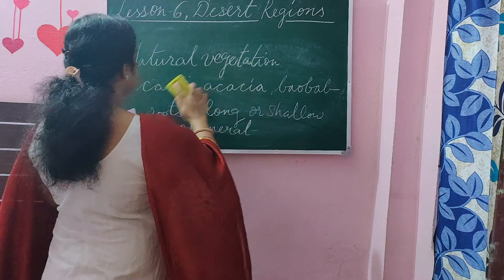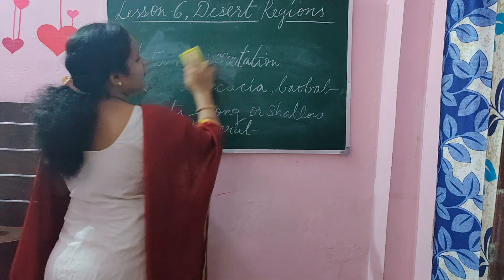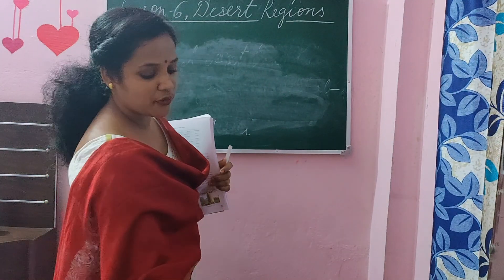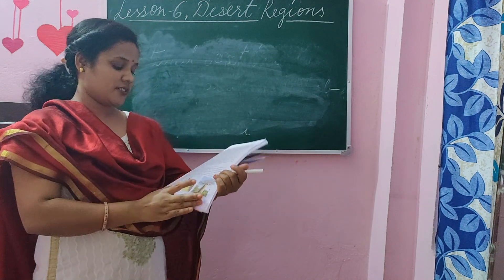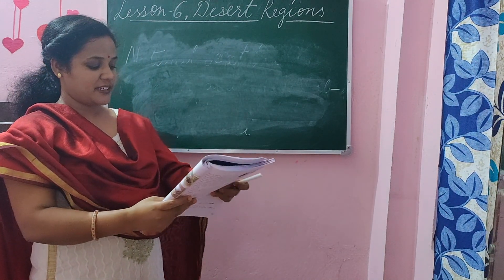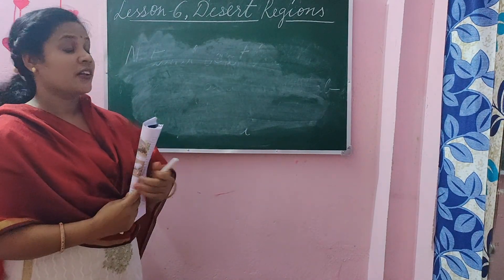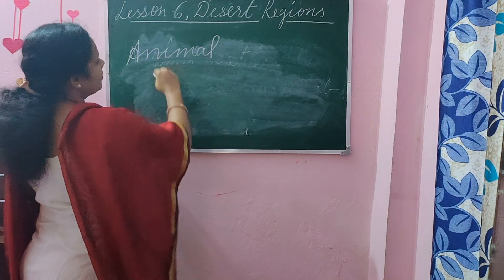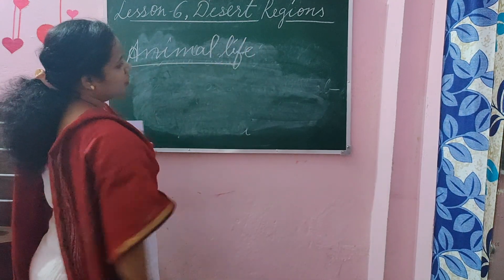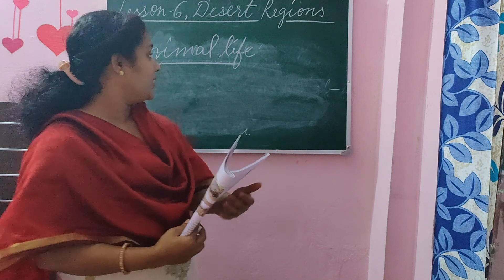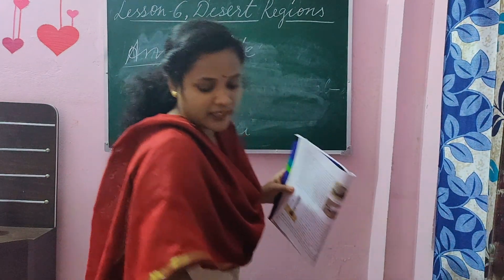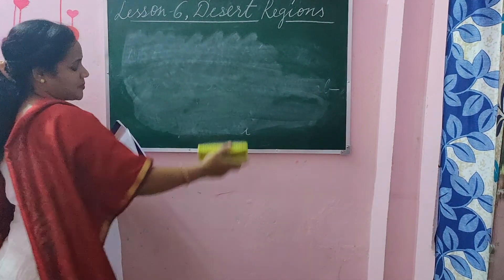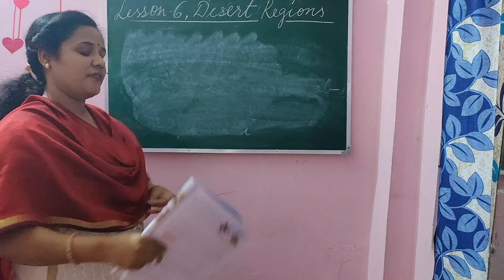Next we have to see the next heading. Turn to page number 30. On page number 30, we have to learn about animal life. Open that heading — animal life.